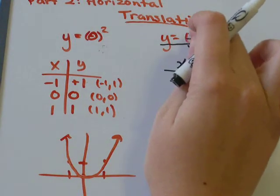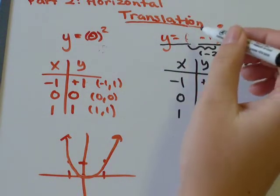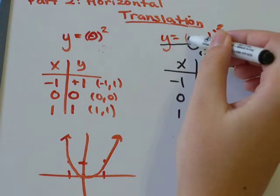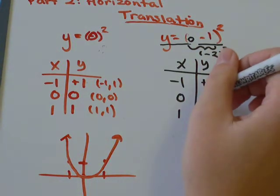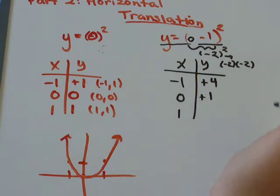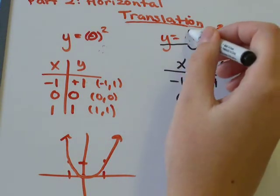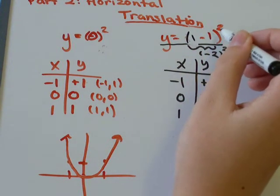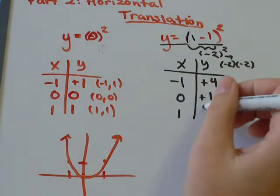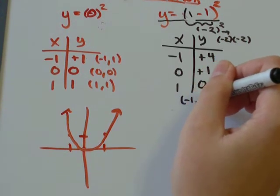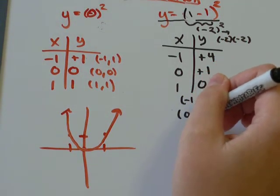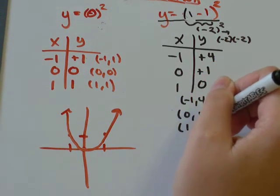Then I've got 0 minus 1 would be negative 1 squared. Positive 1. And if I put 1 in here, I've got 1 minus 1 squared. That would be 0. 0 squared would be 0. So now I've got the points negative 1, 4, 0, 1, and 1, 0.